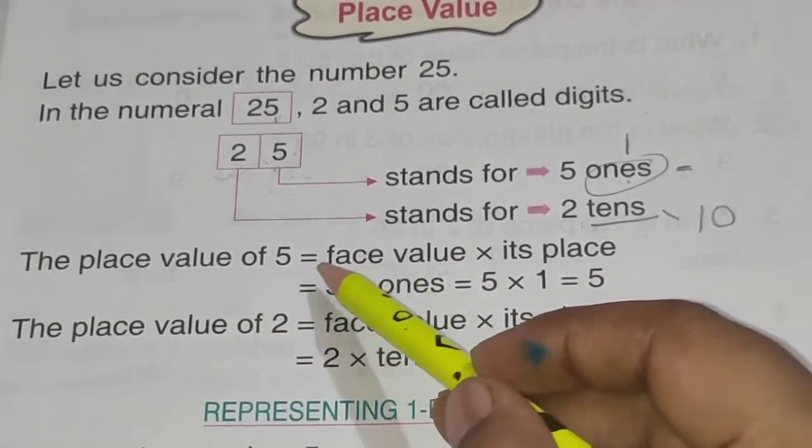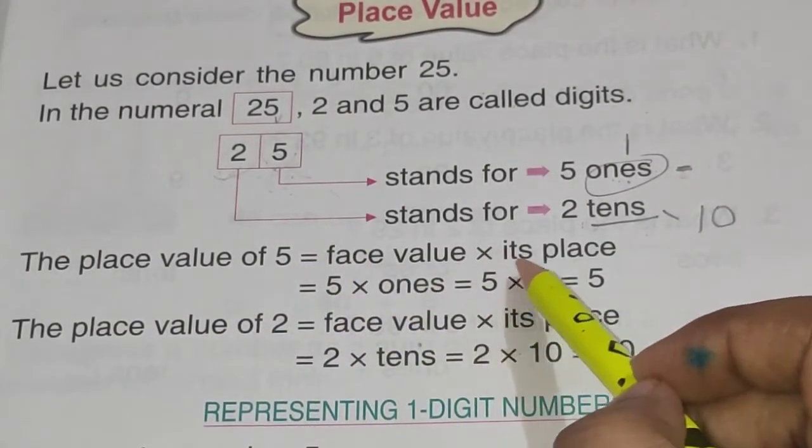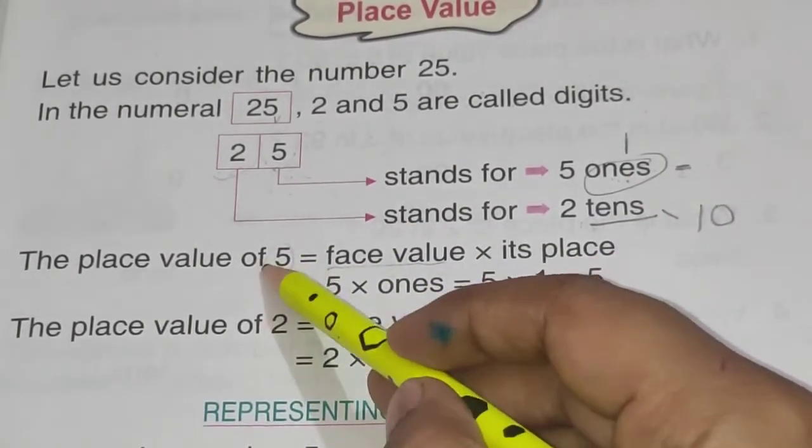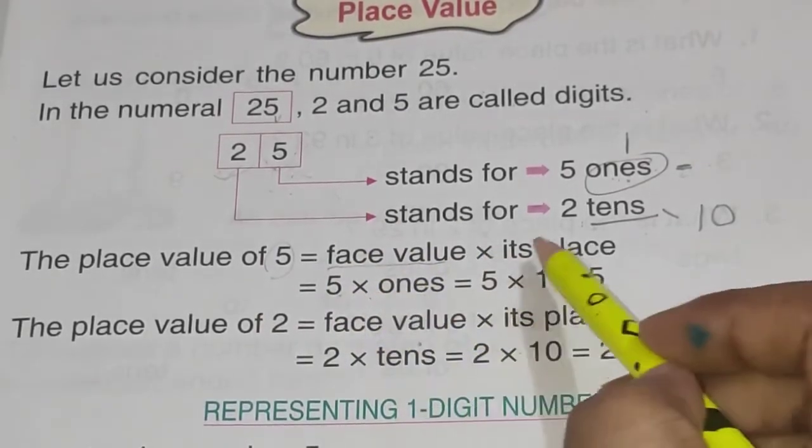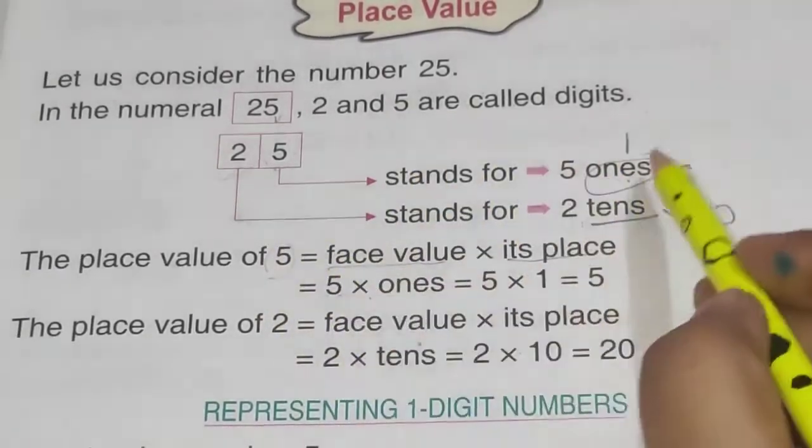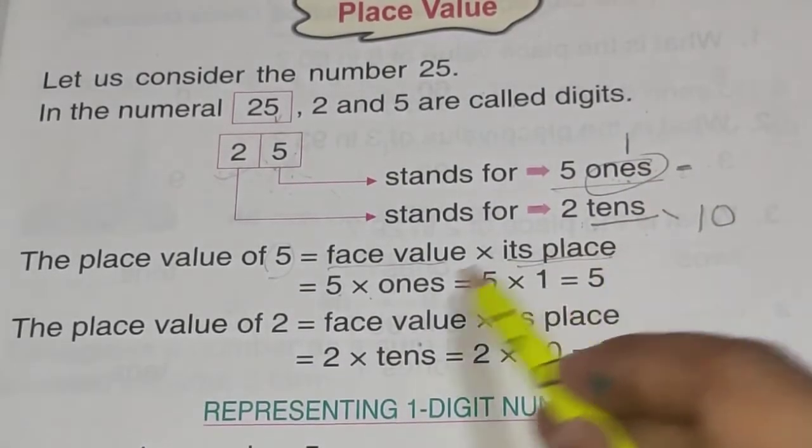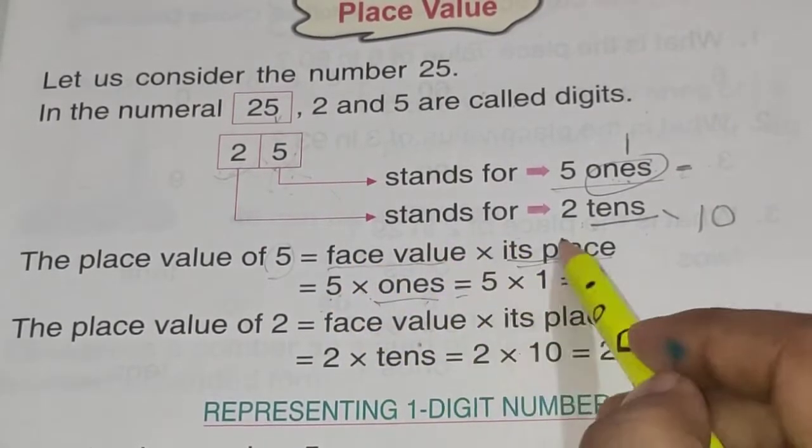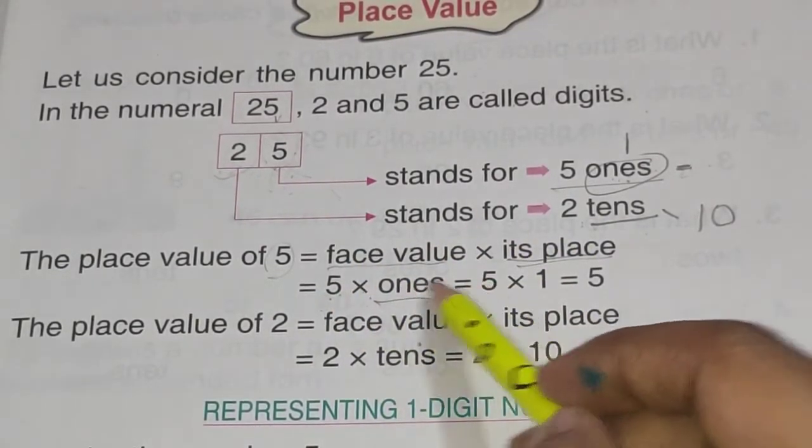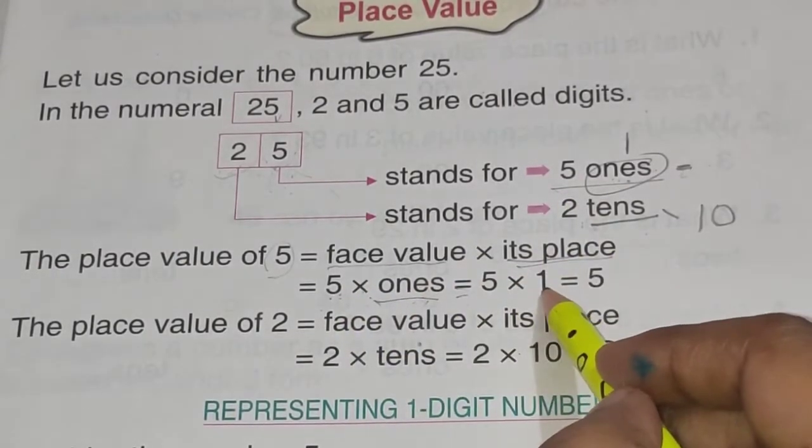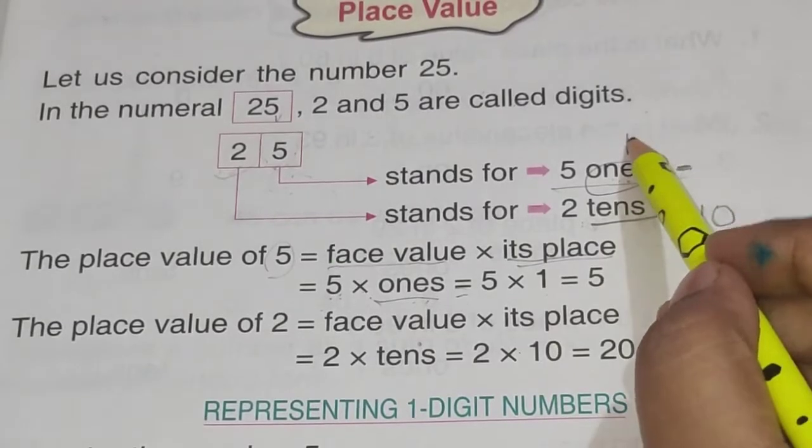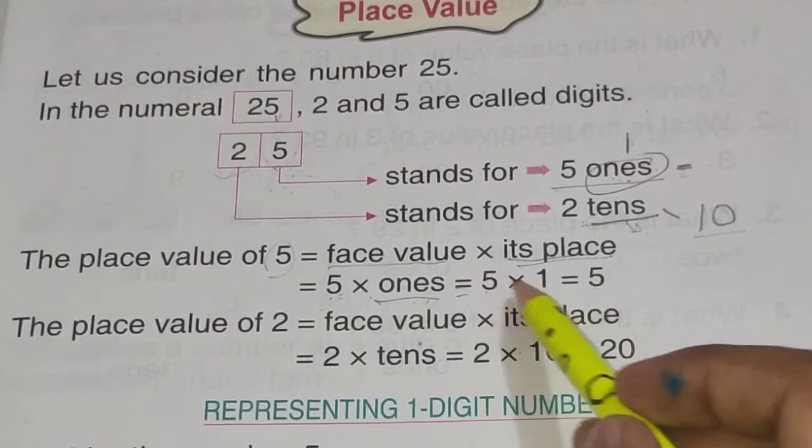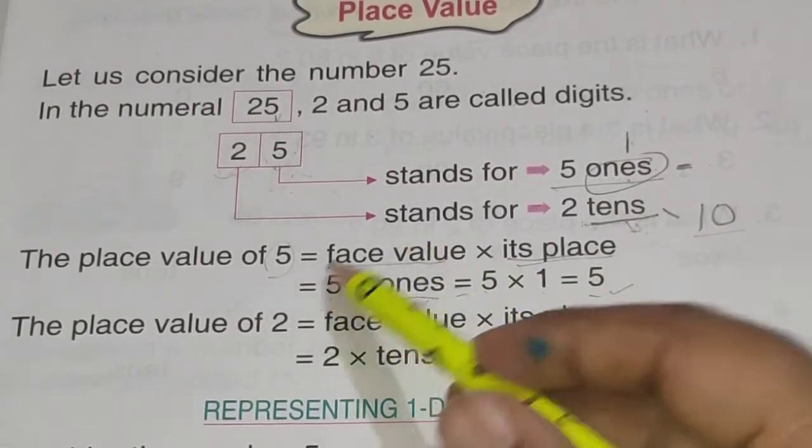The place value of 5 is equal to face value into its place. Face value kisi bhi number ki face value wohi number hota hai. So 5 ki face value 5 hi hogi. Into means multiply and its place. So 5 ki place kya hai yaha par? 5 ki place ones hai na? Its place ones. So 5 into ones and that is equal to face value is 5 into its place is ones. 5 into ones ki jagah kya value aayegi? 1. Ones ki value hoti hai 1 and tens place pe jo number hota hai iski value hoti 10. So 5 into 1 means 5 ones are 5. So place value of 5 is 5.